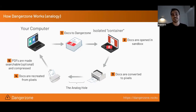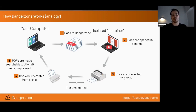At the end, to make it usable for journalists, since images by themselves aren't searchable, Danger Zone does optical character recognition so you can search and select text within documents. It also compresses the result because images are huge in size, so the final version needs to be compressed.